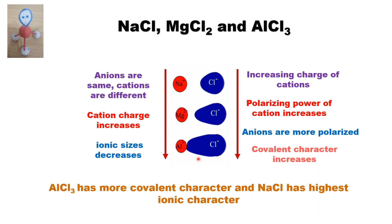Increasing polarizing power of the cation means the polarizability of the anion is also increasing. In aluminium chloride, aluminium has a +3 charge, which means it has very strong polarizing power. That is the reason the outer orbital of Cl⁻ is more distorted, and the Cl⁻ orbital is going to overlap with the Al³⁺ orbital.